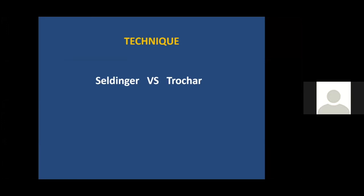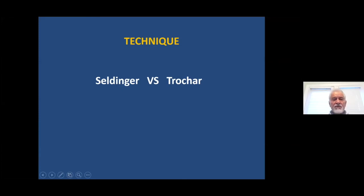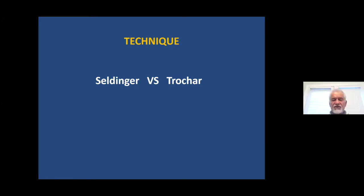There are two approaches to entering any cavity within the body — whether a blood vessel, cystostomy, or gastrostomy. One is the Seldinger technique, and the other is the trocar technique. In the Seldinger technique, you place a needle and replace it with a guide wire, then place a catheter over the guide wire into the cavity for drainage. In the trocar technique, you have a catheter over a needle or trocar and insert the whole assembly through the skin into the cavity.